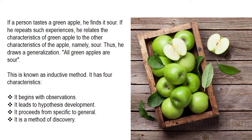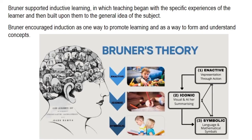For example, if a person tastes a green apple, he finds it sour. If he repeats such experiences, he relates the characteristics of green apples — that is, sour — to other apples, and draws a generalization saying that all green apples are sour. This is known as the inductive method. It has four characteristics: it begins with observations, it leads to hypothesis development, it proceeds from specific to general, and it is a method of discovery.